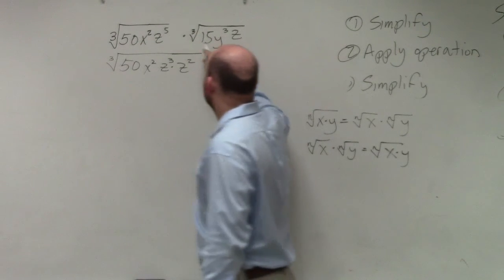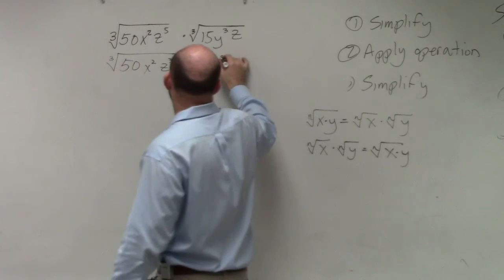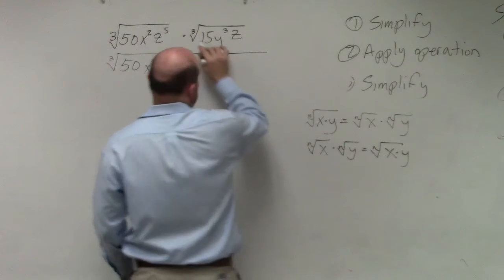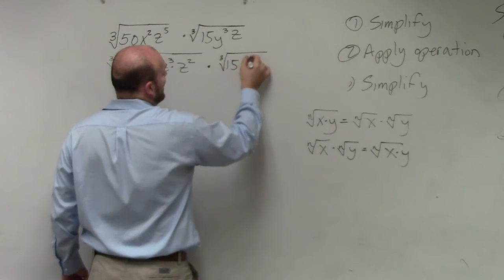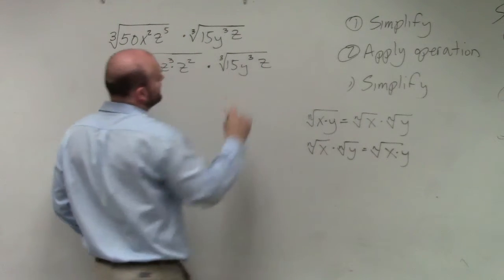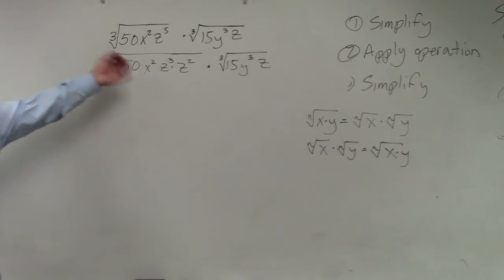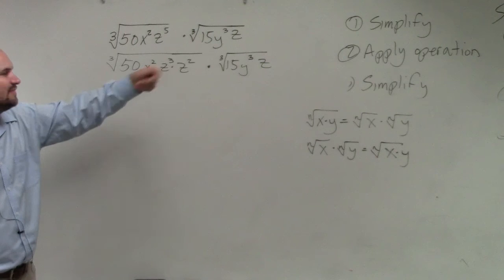Then I move to the next one. Here, I'm going to simplify everything. 15 I can't do anything with. y is already to the third power. And then I have z. So I'm just rewriting it. It's a little bit extra step. You could simplify it here both, though.